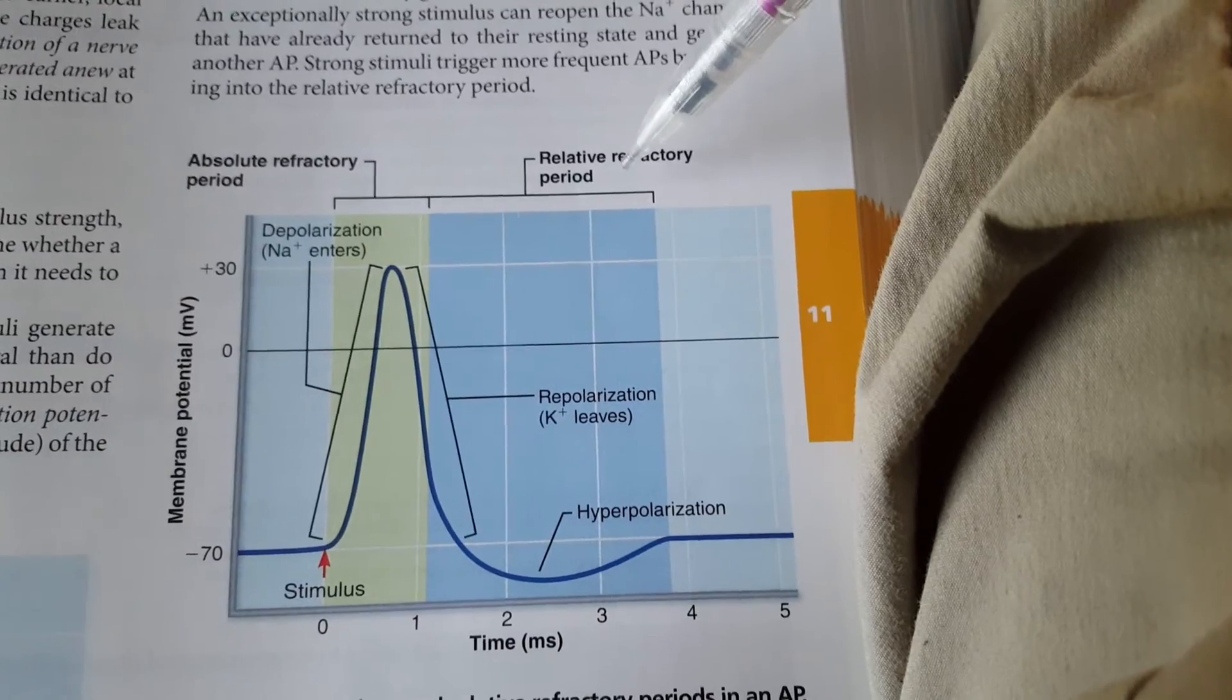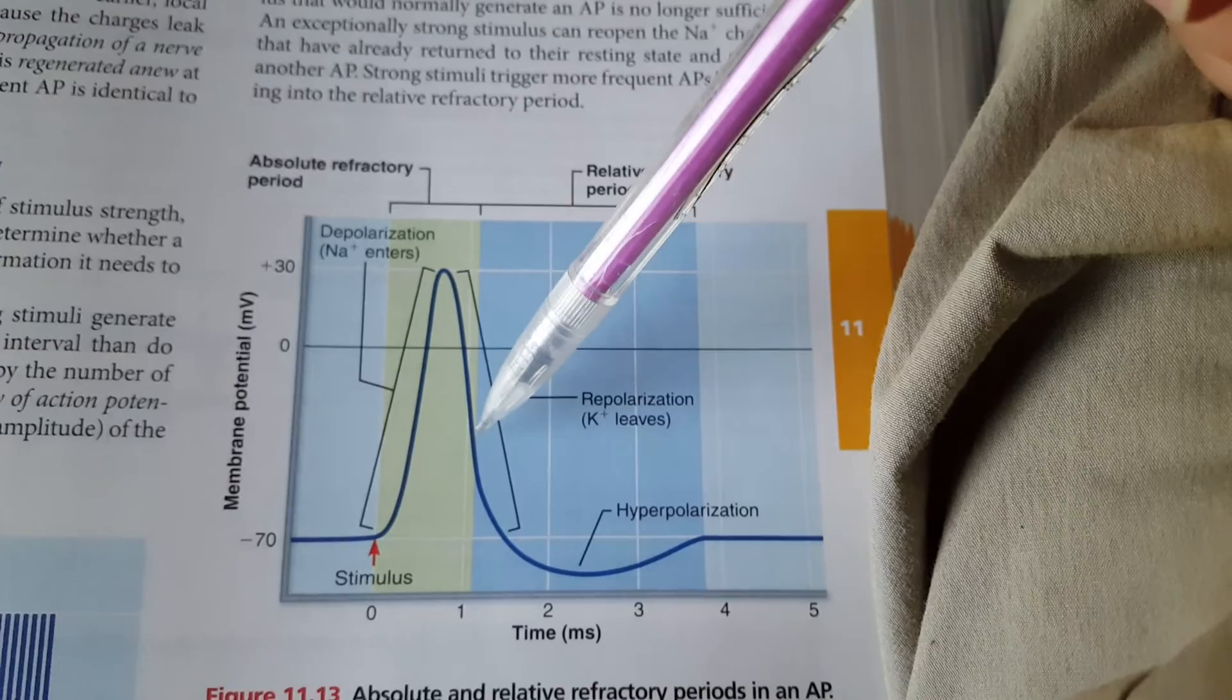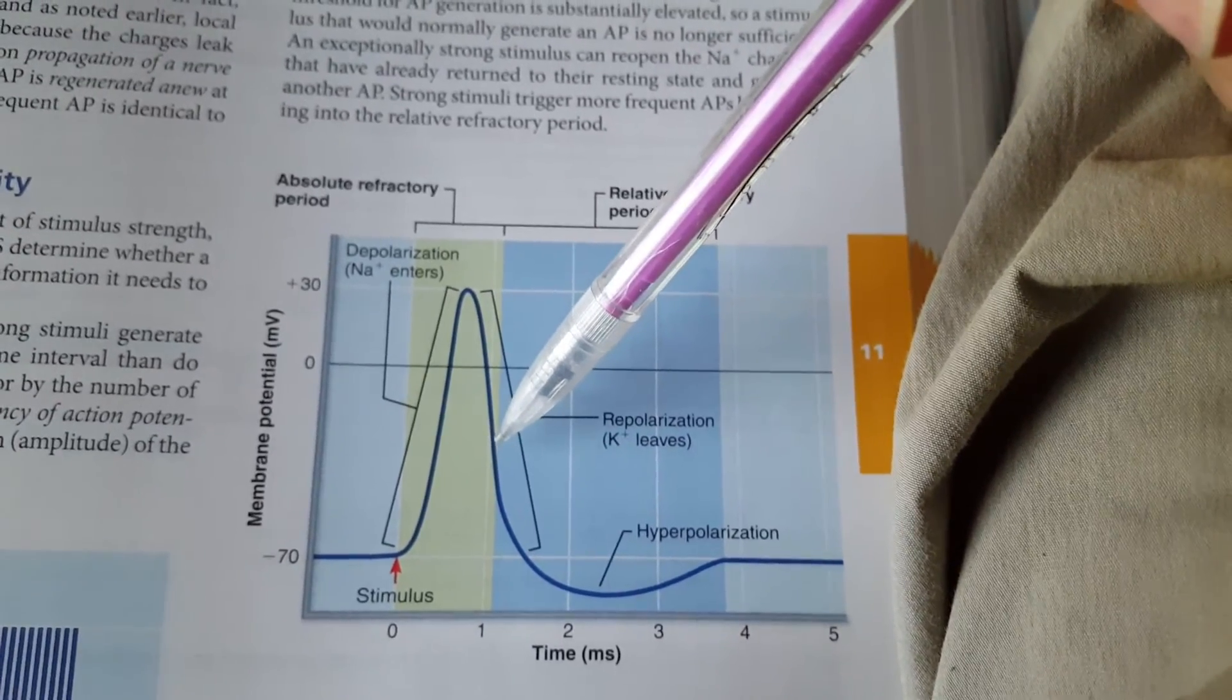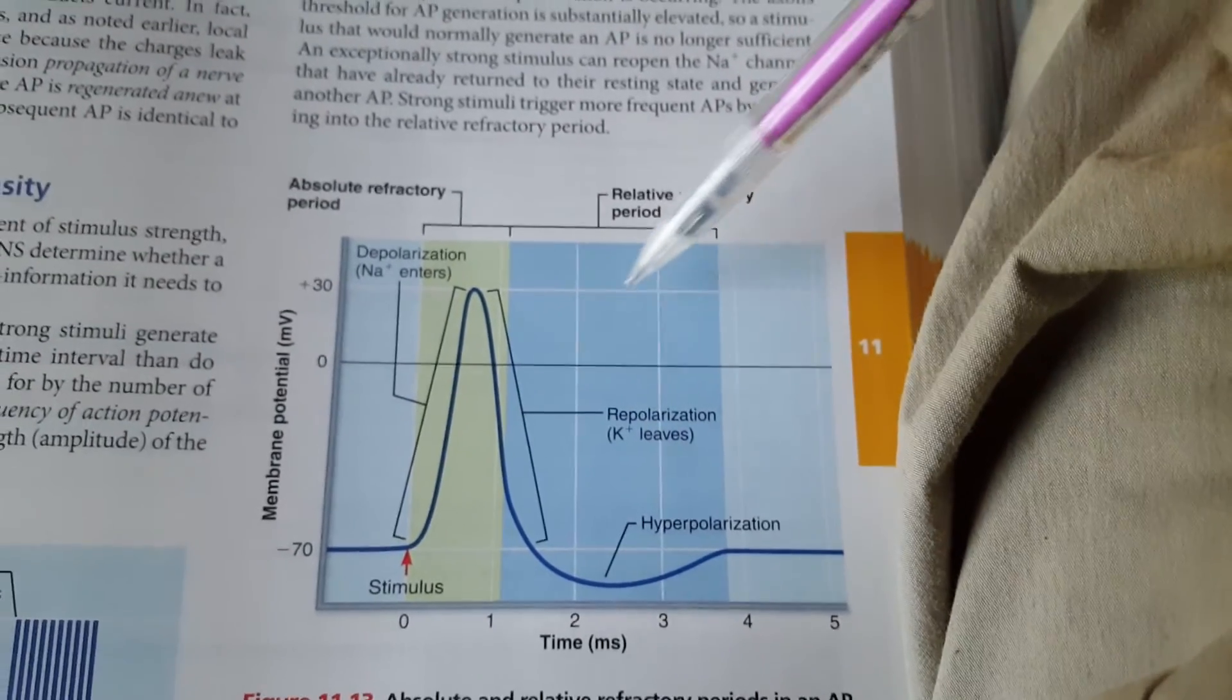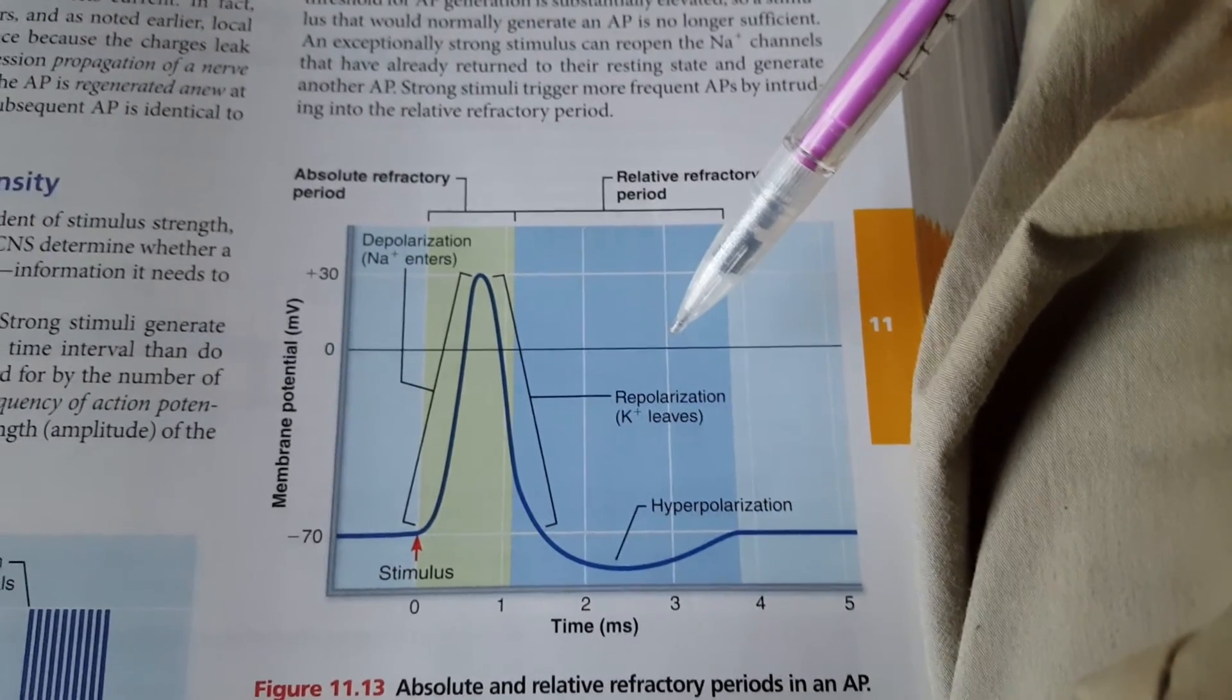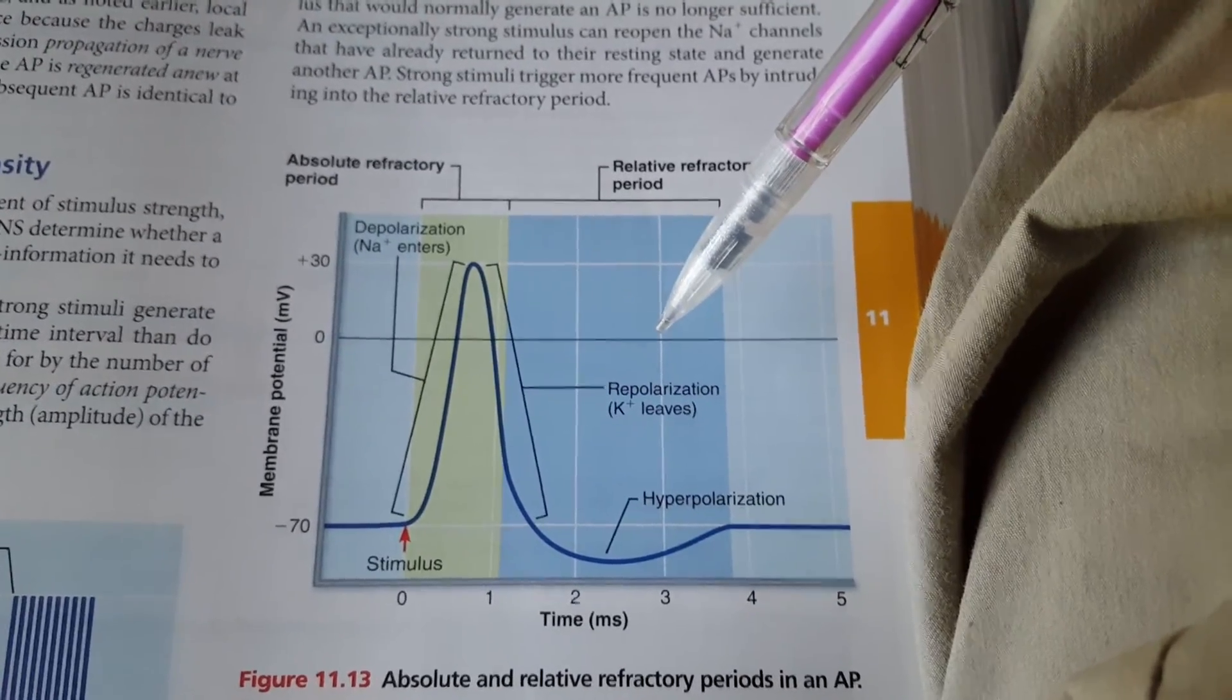In the relative refractory period, which happens when the membrane has started to reestablish itself and it's about halfway there, or even a little bit more than halfway there back to normal, that's your relative refractory period. So you might be able to get a second action potential relative to the strength of the stimulus.